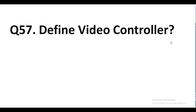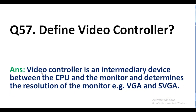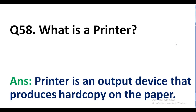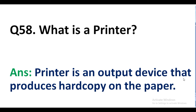Question number 57. Define video controller. Answer. A video controller is an intermediary device between the CPU and the monitor and determines the resolution of the monitor. Examples: VGA and SVGA. Question number 58. What is a printer? Answer. A printer is an output device that produces hard copy on paper.